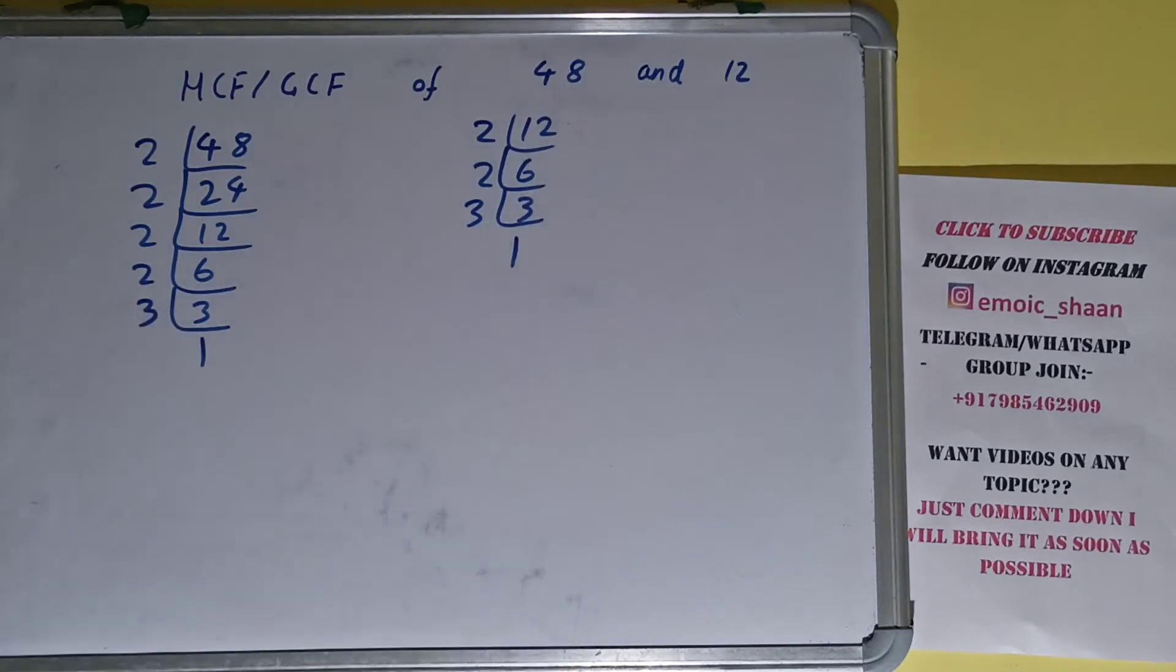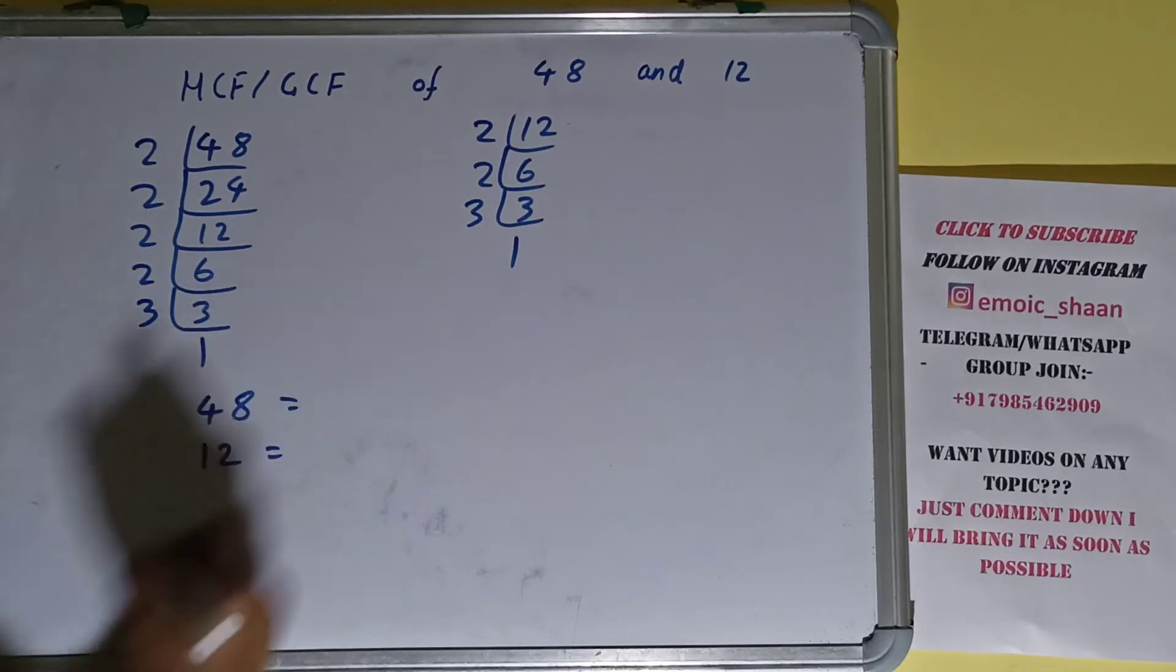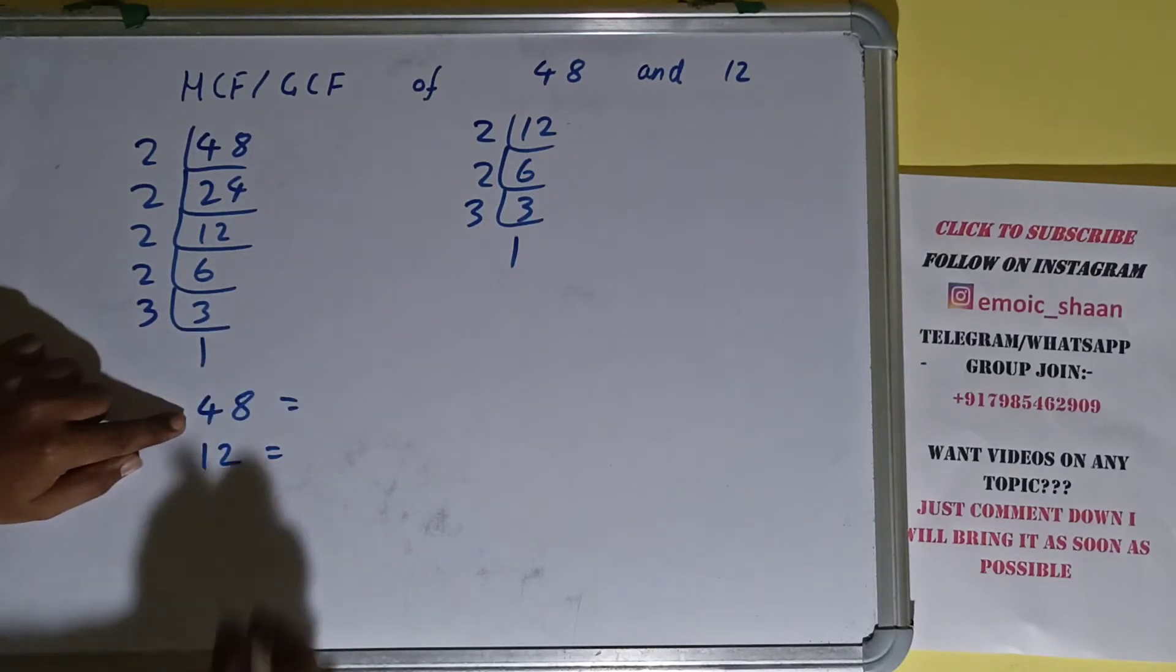So we are done with the prime factorization stuff. The next thing we need to do is write down each of the numbers with their respective prime factors. So for 48, what prime factors do we have? 2, 2, 2, 2, 3.